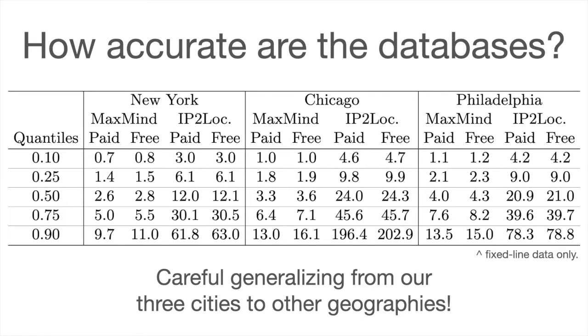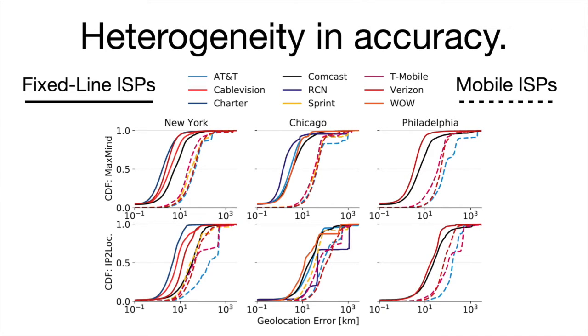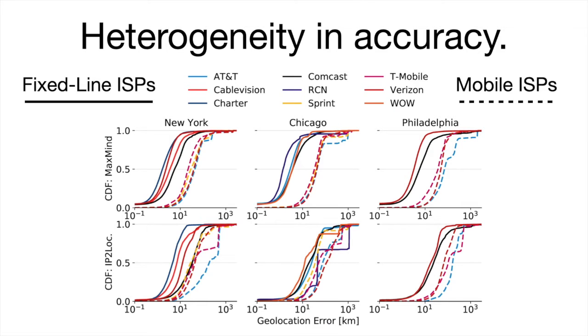Still, we would encourage caution in generalizing from our three cities to other geographies. Next, we wanted to break down heterogeneity in geolocation performance by ISP. Here we're showing the CDF of geolocation error by city and database. Fixed-line ISPs are shown with solid lines, and mobile ISPs are shown dashed. It's clear that the accuracy of geolocation databases is totally different for fixed-line and mobile IP addresses — geolocation errors are far higher on mobile than fixed-line networks. Mobile ISPs use carrier-grade NATs, so they're using even individual IP addresses over and over again for many users. But there are also big differences in performance even within the fixed-line ISPs, like Comcast shown here as the black lines, and we wanted to pull this apart yet further.